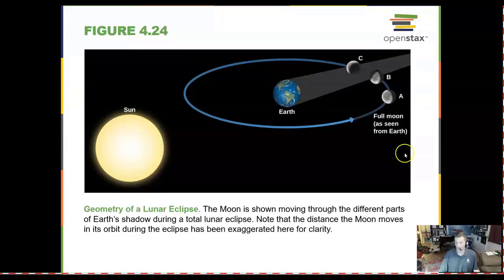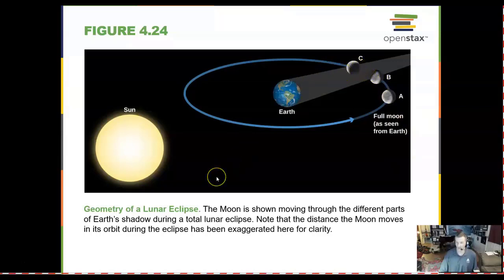In the lunar eclipse, the moon goes through the shadow cast by the Earth out into space and turns a dark red.